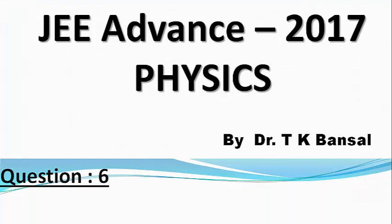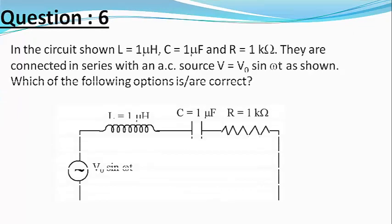Our next question from this paper is: in the circuit shown L equals 1 micro henry, C equals 1 micro farad and R equals 1 kilo ohm. They are connected in series with an AC source V equals V0 sin of omega t as shown in the figure. Which of the following options is or are correct?